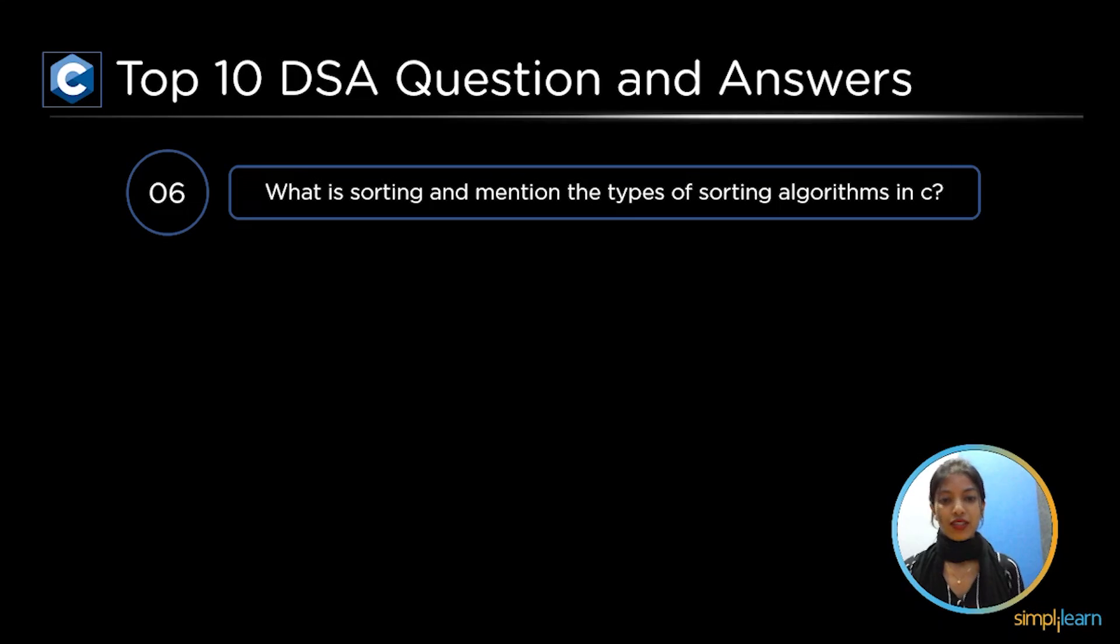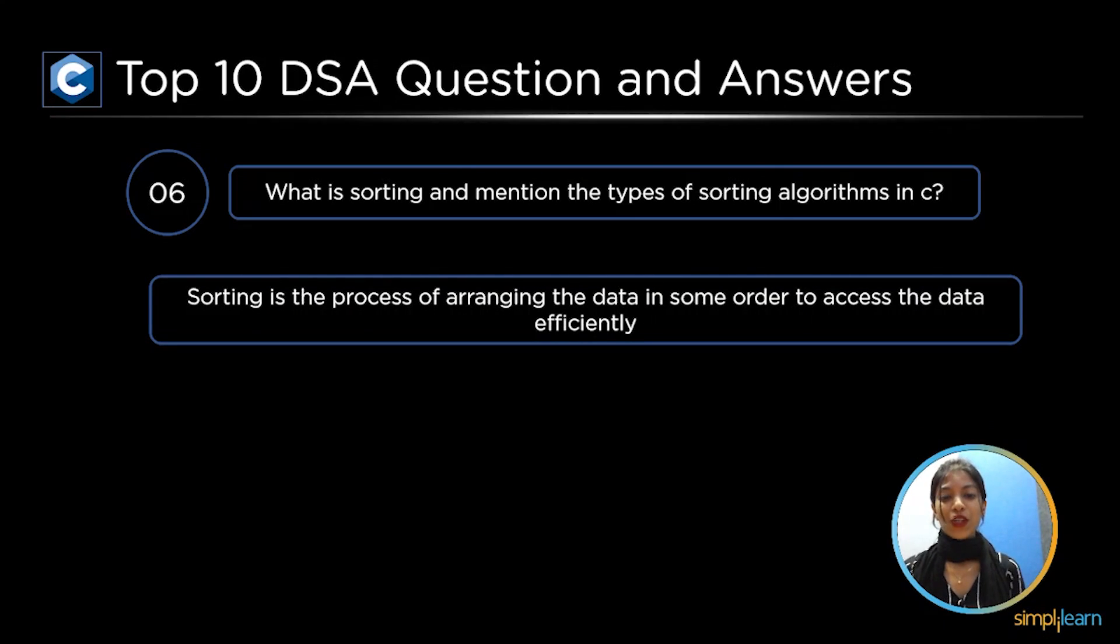Next, top sixth question is what is sorting and mention the types of sorting algorithms in C. Sorting is the process of arranging the data in some particular order to access the data efficiently.